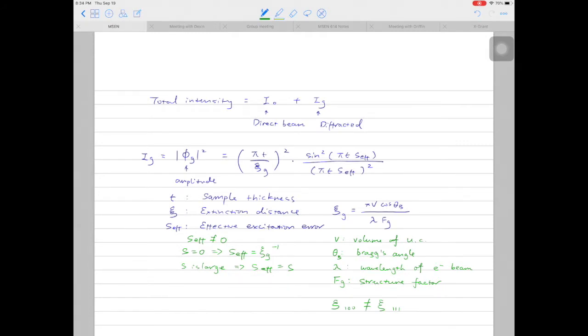Assuming the sample is super flat and the ebosphere is cutting through the center of the red rods and there's no bending, then s is equal to zero, so there's no excitation error. And if we substitute this value into this equation, what we're going to have is sf to be written as one over ccg.